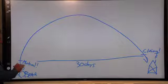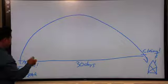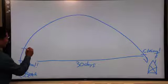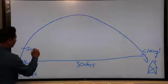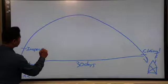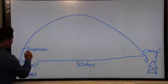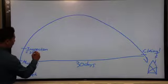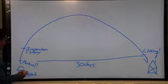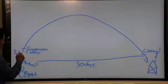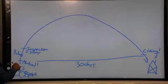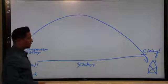Once we have mutual acceptance, the timelines start. So, the first timeline we have is inspection. Inspection equals story. And this happens about three days between mutual and inspection date.